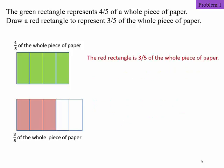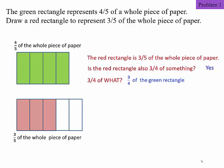This red rectangle is three-fifths of the whole piece of paper. Is the red rectangle also three-fifths of something? Yes. But it's three-fifths of what? Three-fifths of the green rectangle. Can you see that?